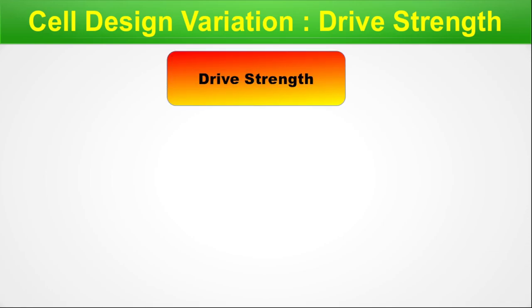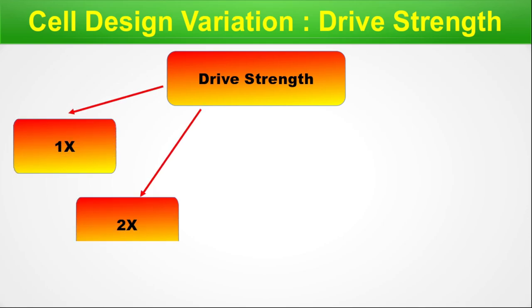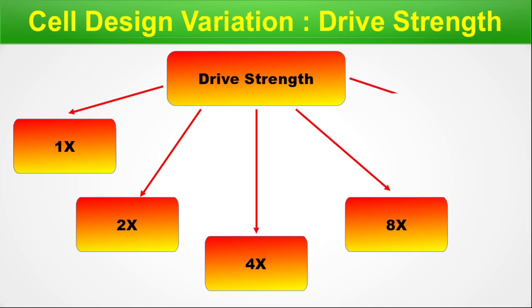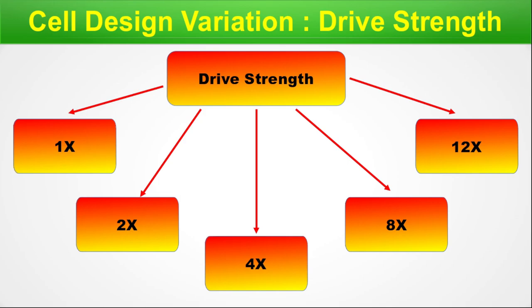Cell design variation — drive strength. This covers the drivability of a cell: how many outputs it can drive. As per the drive strength, any standard cell can have variations: 1x (can drive one output), 2x, 4x, 8x, 12x, and many more as we can design the cell to increase its drive strength. At this point we have already seen three different kinds of variation — VT, track, and drive strength — for a single standard cell, so you can imagine how large a standard cell library physically becomes.